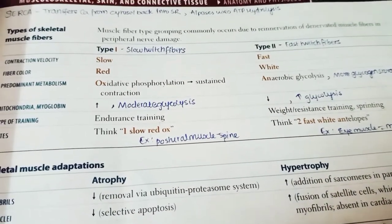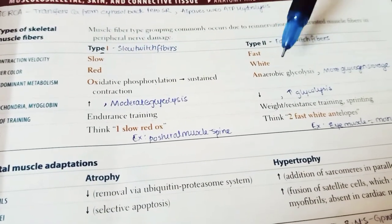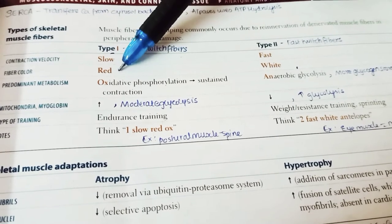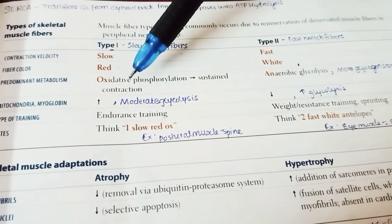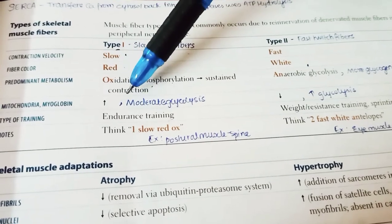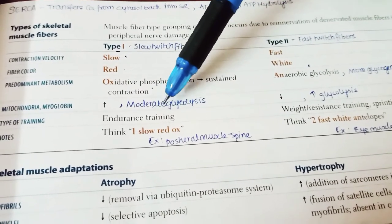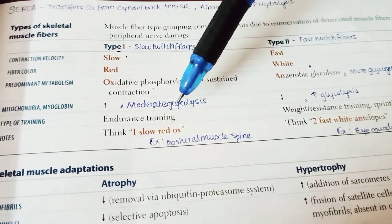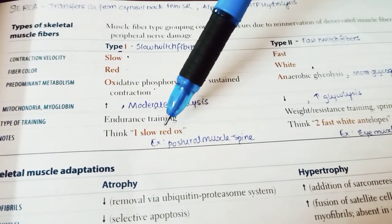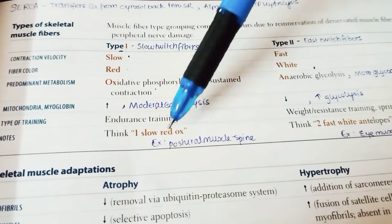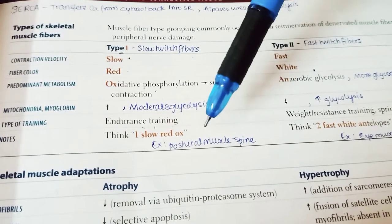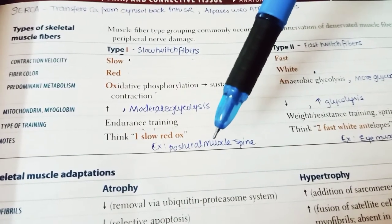Skeletal muscle fibers are divided into Type 1 and Type 2. Type 1 are slow-twitch fibers — slow contracting, red in color, using oxidative phosphorylation for sustained contraction. They have high mitochondria and myoglobin. Remember: slow, red, oxidative = Type 1. Example: postural muscles of the spine.